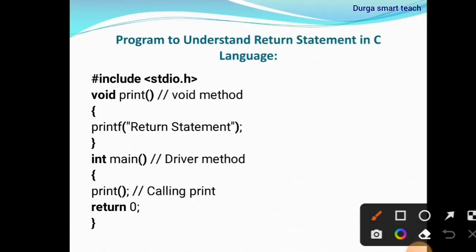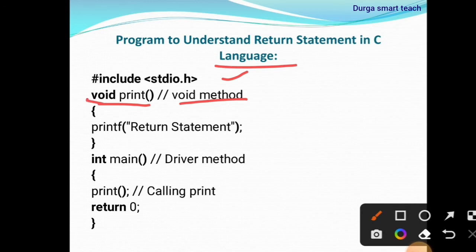Let's see a program to understand the return statement in C language. So hash include stdio.h — this is the header file. void print — this is a method and it has return type void. Void means nothing, it is empty. printf return statement.